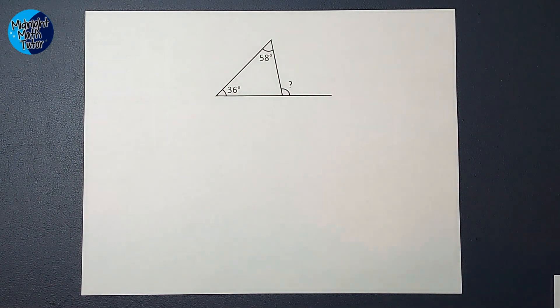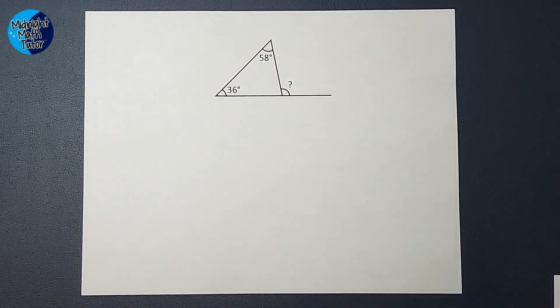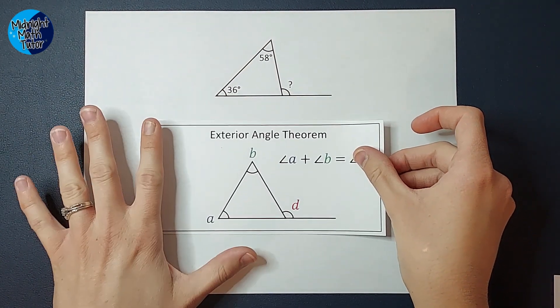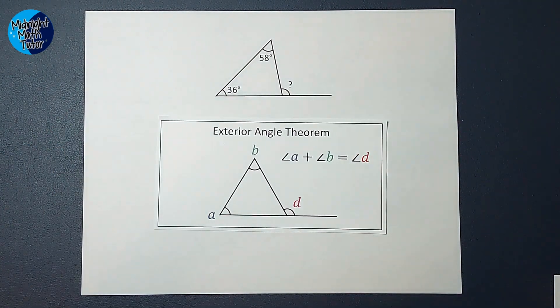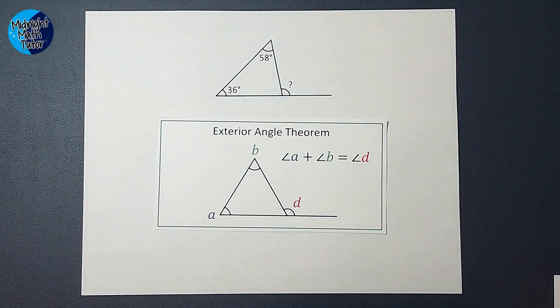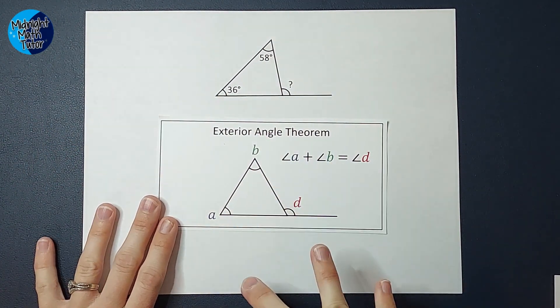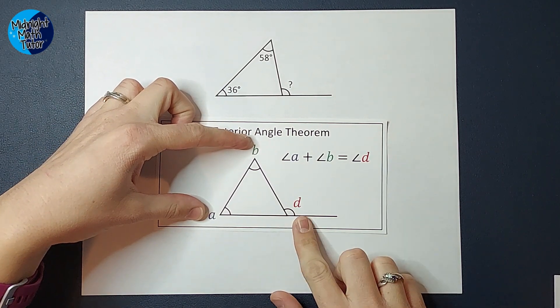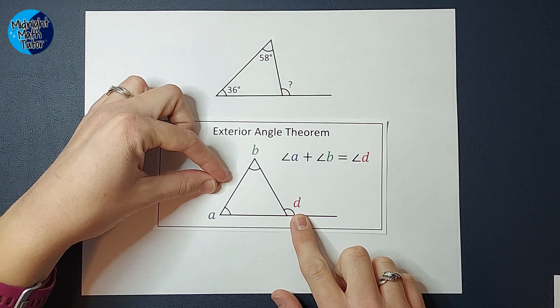Hey guys, we are talking exterior angle theorem today, and if that doesn't make you happy, I don't know what will. This is our exterior angle theorem. It tells me when I've got a situation that looks like this, I've got a flat line, a triangle, and I know these two angles, they added together will give me this angle.